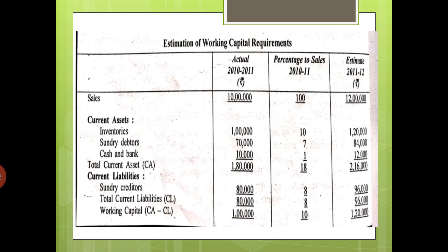If this is a simple question — for example, in multiple choice questions or competitive tests — we need not go through all the stages. Simply find the sales. In the first year, sales is 10 lakhs and working capital is 1 lakh, so working capital is 10% of sales. In the second year, sales is 12 lakhs, so working capital will be 10% of 12 lakhs, that is 1 lakh 20,000.